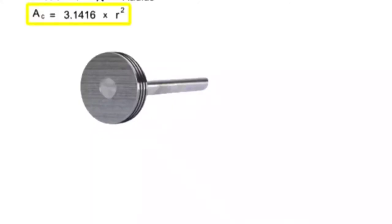By substituting the appropriate values for pi and diameter, we can simplify this equation to Area equals 0.7854 times diameter squared.